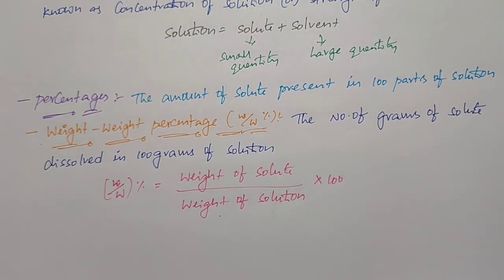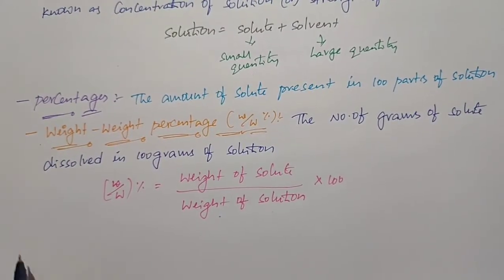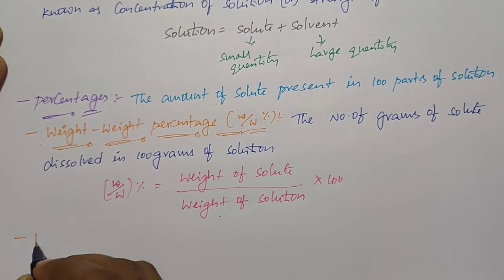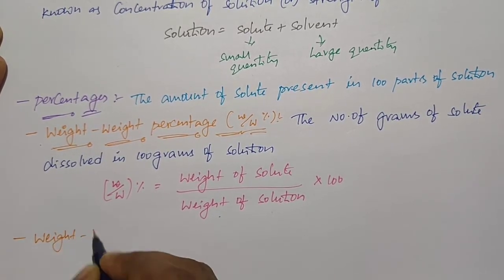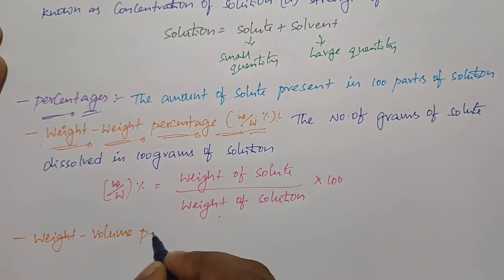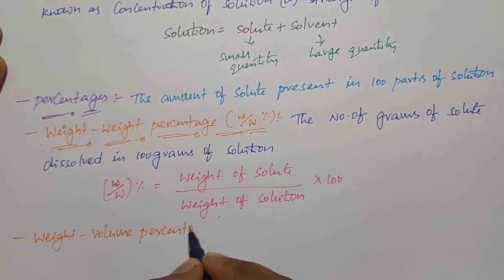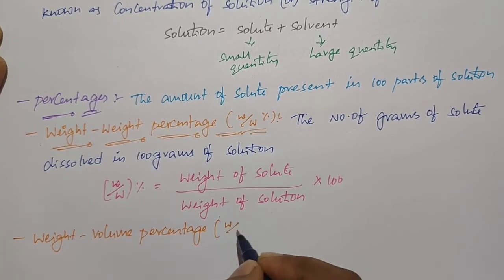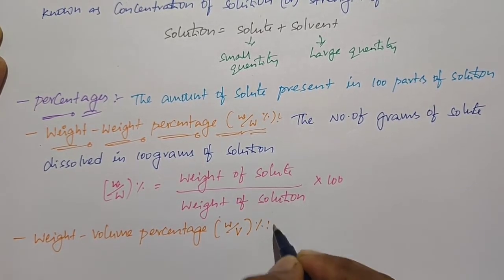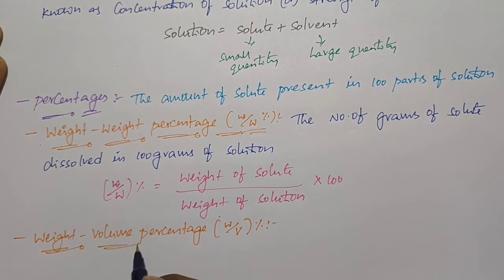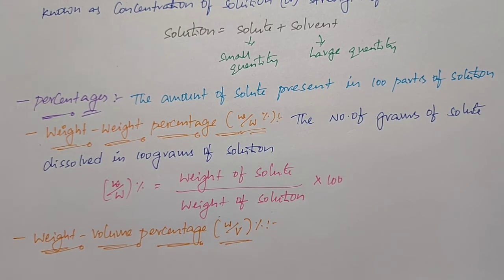The next one is weight-volume percentage. Weight-volume percentage is represented by w/V. It means the number of grams of solute dissolved in 100 mL of solution is called weight-volume percentage.